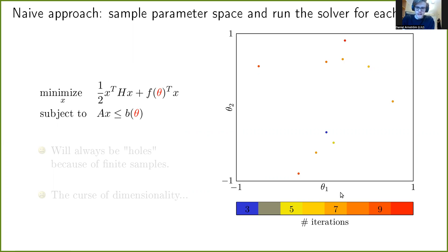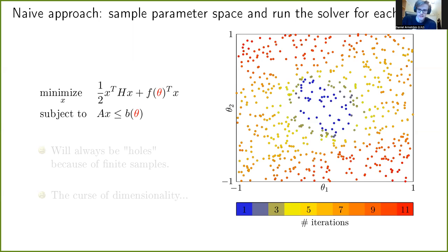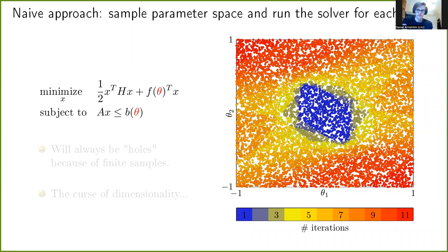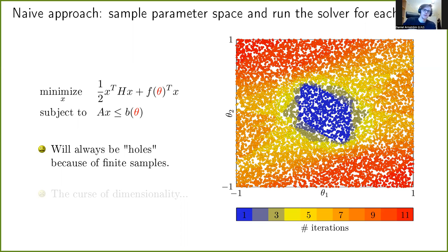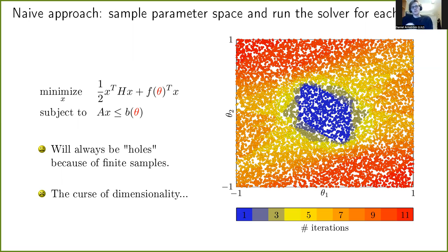In this naive sampling approach, one picks samples and solves the corresponding QP, recording how difficult it was — for example the number of iterations. With enough samples you might get a picture suggesting the worst case is 11 iterations, which seems plausible. However, a main drawback is there will always be holes since we are limited to a finite number of samples. We can never guarantee we've seen the worst case — a pathological example might hide in one of those holes. This becomes worse as parameter dimension increases due to the curse of dimensionality.